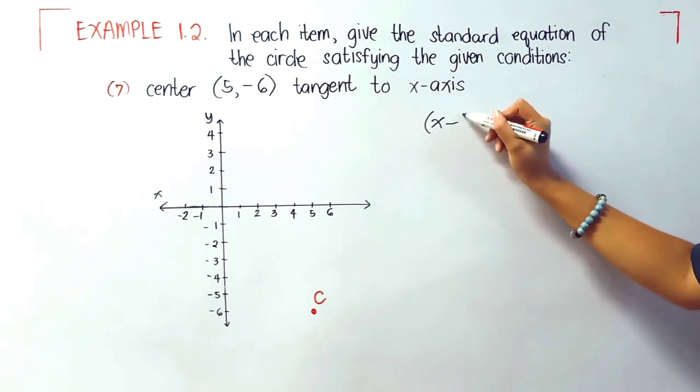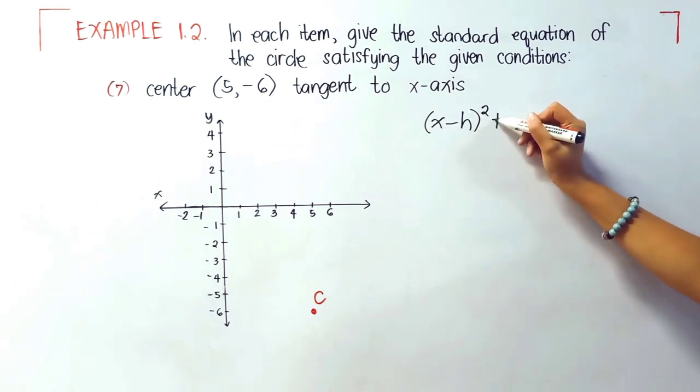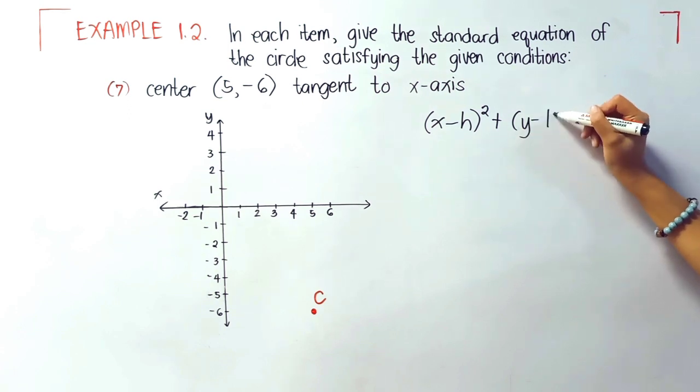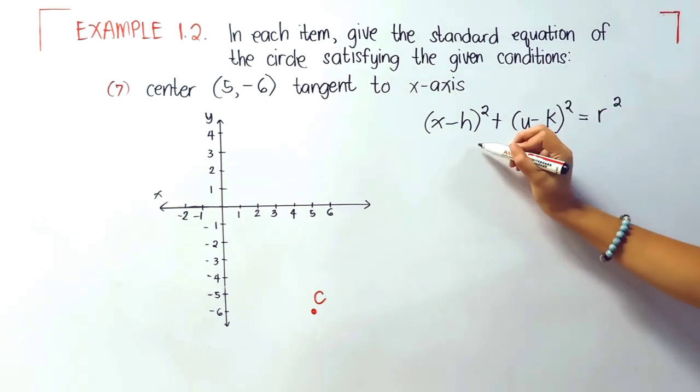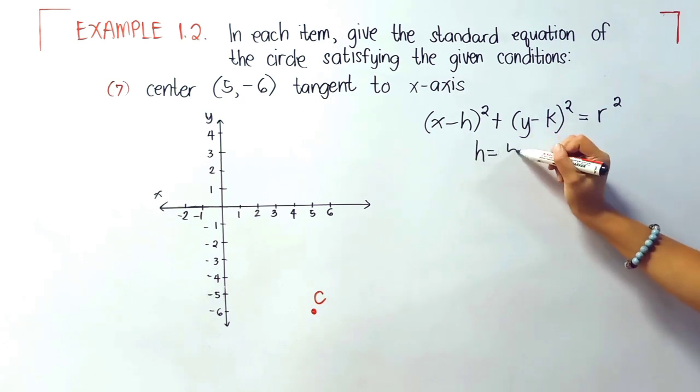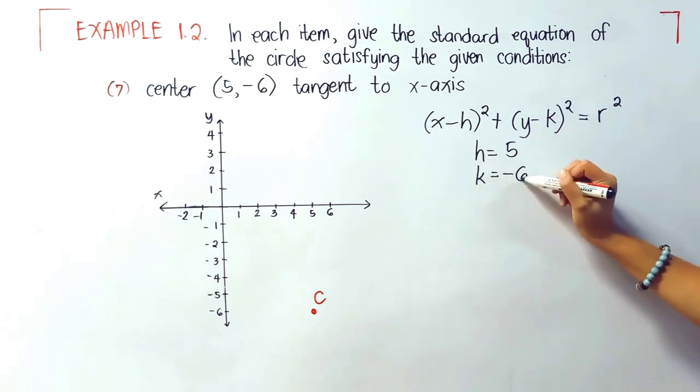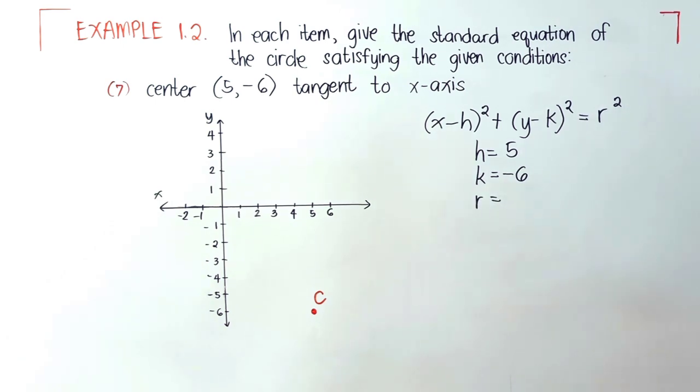Since it's not in the origin, we'll be using x minus h quantity squared, y minus k quantity squared equals r squared. Our h is 5, our k is negative 6, our r is still unknown.